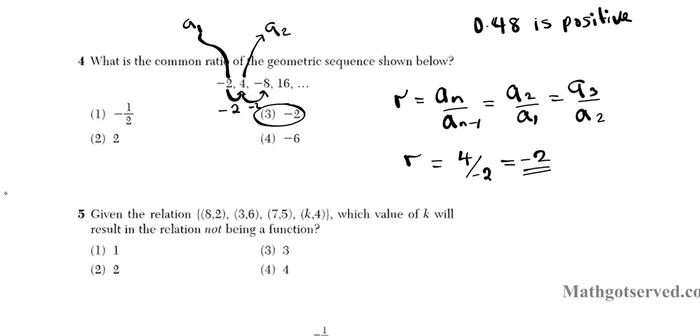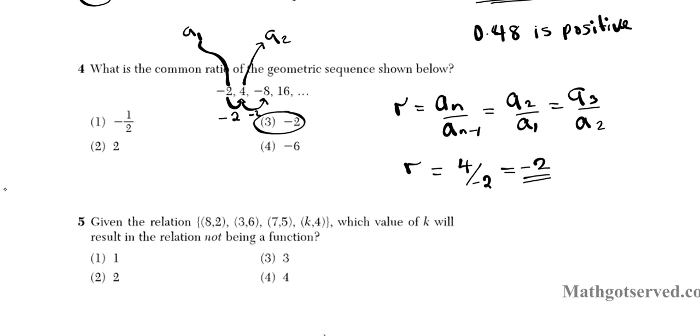Let's take a look at number 5. It says given the relation, we have this relation in ordered pairs. It says which k value will result in a relation not being a function? So a function assigns every input to one unique output. So if we have one input being assigned to more than one output, then you have a problem. So 8 is being assigned to only 2, 3 to 6, 7 to 5.